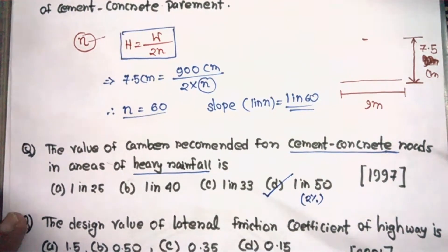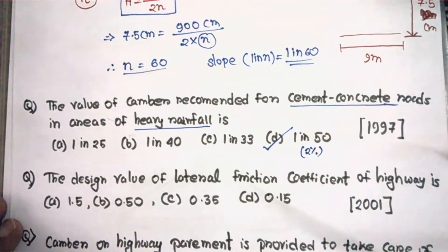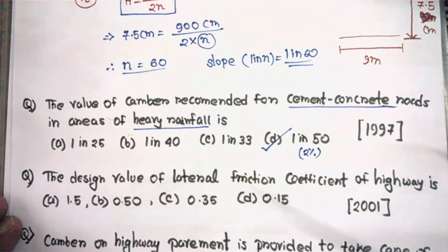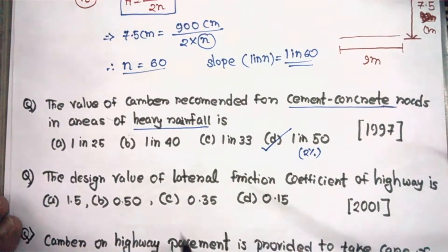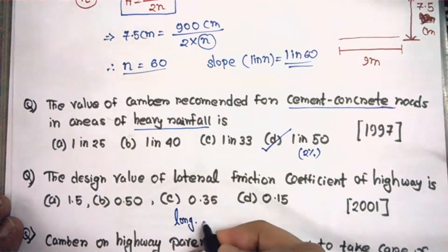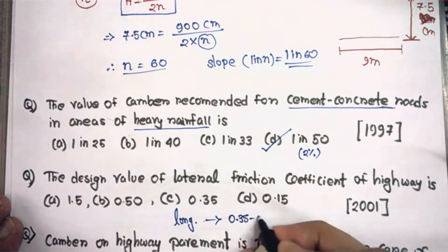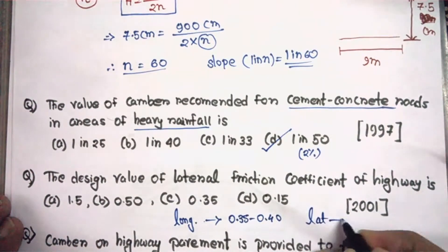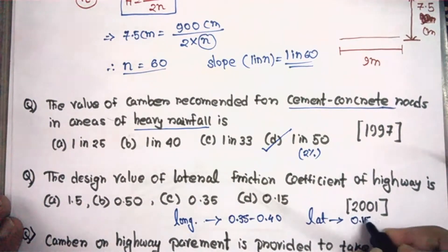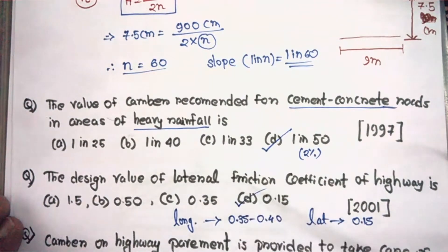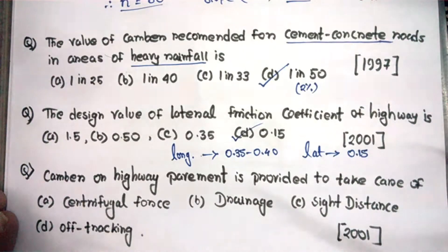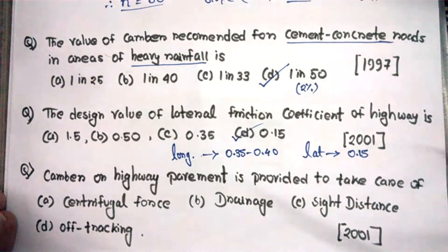The next question: what is the design value of the lateral friction coefficient of a highway? I have told you the limiting values of longitudinal friction and lateral friction. For longitudinal friction, the limiting value is 0.35 to 0.40. For lateral friction, the limiting value is 0.15, so the right option should be 0.15.